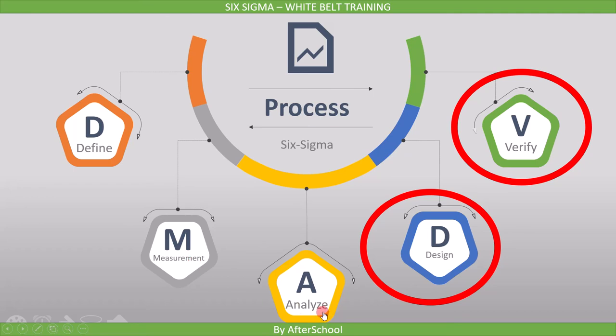Next is Analyze. In Analyze, we look at all the options available based on the data collected in the measurement phase. Once you decide the correct option for your process based on your analysis of the collected measurement data, you move to the next step, which is Design.